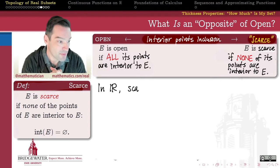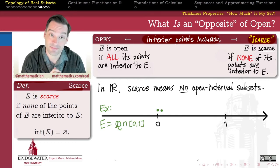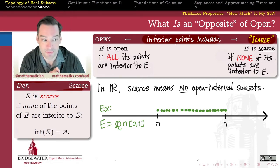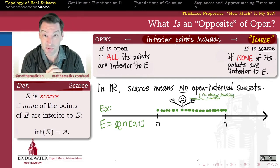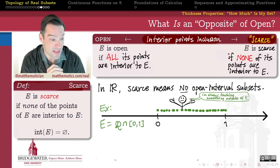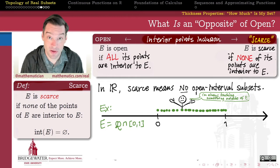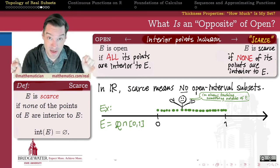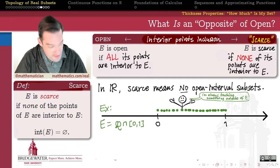How do we understand scarce sets? As a subset of the real line, a scarce set is just one that contains no open interval subsets. For example, if I take all of the rational numbers between 0 and 1, I get a scarce set. The rationals don't contain any open interval subsets — if I stand at any rational number and reach out epsilon arms, I always touch something irrational, since the irrationals are dense within the reals. So this set is scarce.